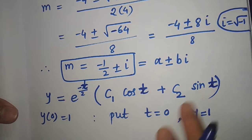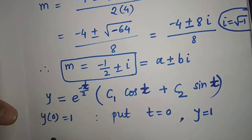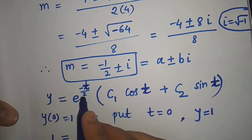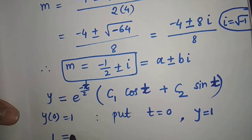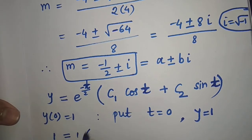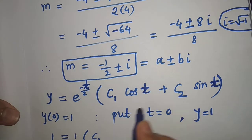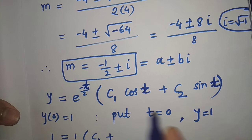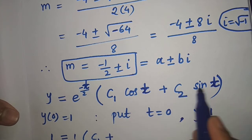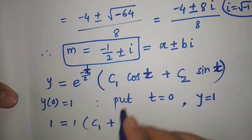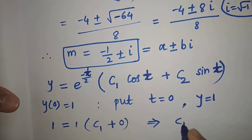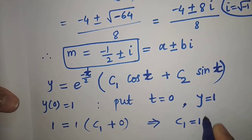When t equal to 0 and y equal to 1, put the values in: LHS is 1; e raised to 0 is 1; c1 times cos 0 is c1 times 1 is c1; c2 times sin 0 is 0. So we get c1 equal to 1.